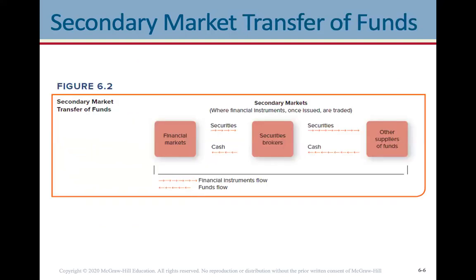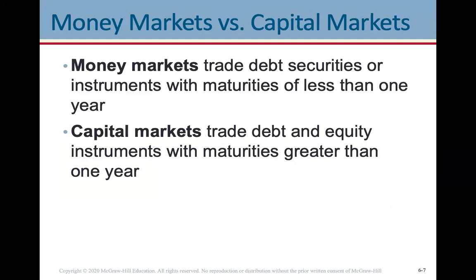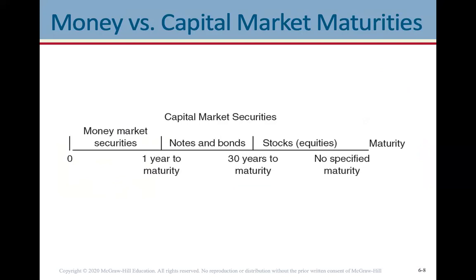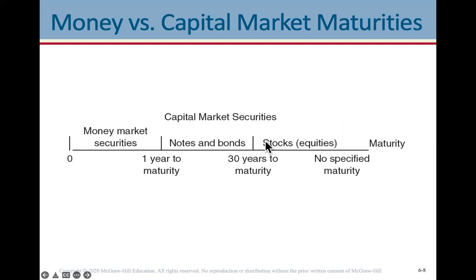Money markets are markets where debt securities or instruments with maturities of less than one year are traded — they are liquid and considered the same as cash. Capital markets trade debt and equity instruments with maturity greater than one year — essentially everything else. Money markets are fairly straightforward: they include cash and government treasury bills with a short maturity, or bonds with a maturity of up to one year.